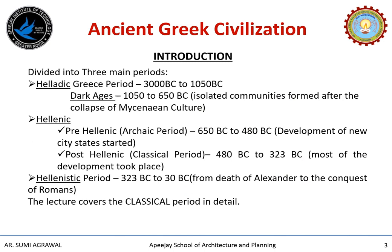The Ancient Greek Civilization can be divided broadly into three main periods. The first one is the Helladic Greece period which spans from 3000 BC to 1050 BC. This is followed by a phase known as the Dark Ages, where isolated communities formed after the collapse of Mycenaean culture were emerging. The second period is the Hellenic period, which can be divided into two phases.